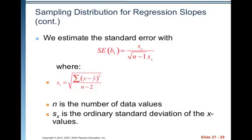We estimate the standard error with SEB1, which equals S sub E divided by the square root of N minus one times S of X, where SEB1 equals the square root of the sum of the Y minus Y hats squared. So the observed Y values minus the predicted Y values squared divided by N minus two. Where N is the number of data values and SX is the ordinary standard deviation of the X values.